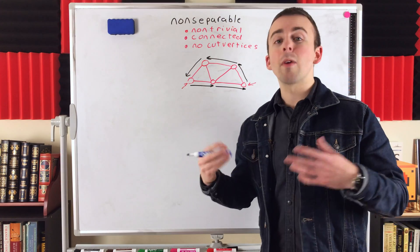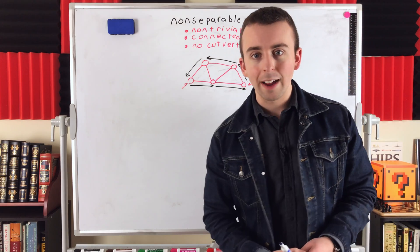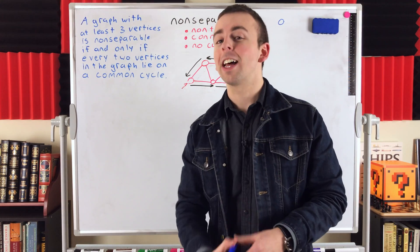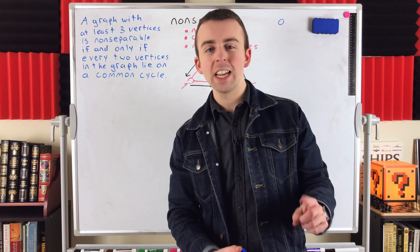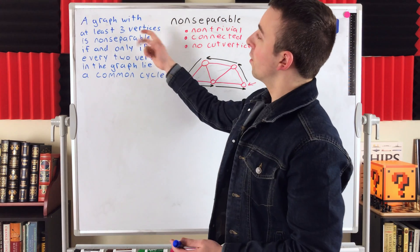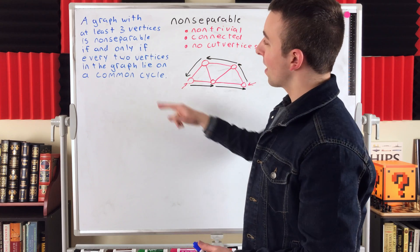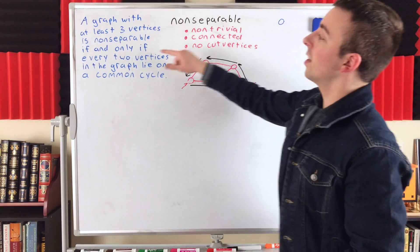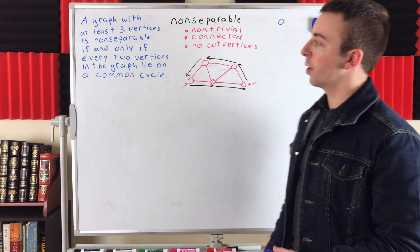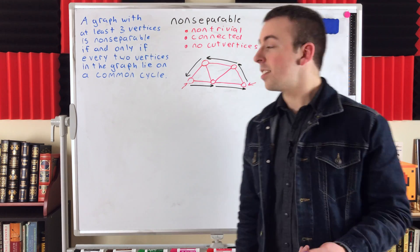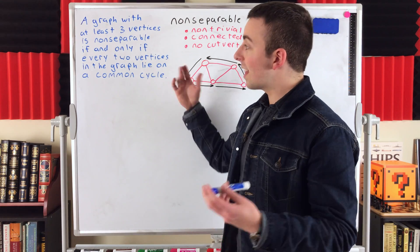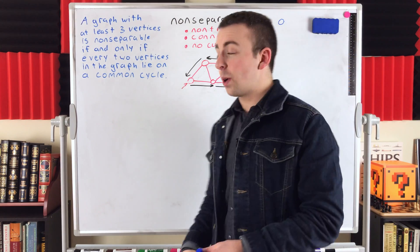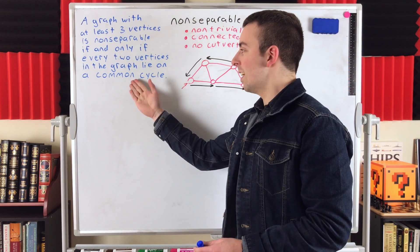Here is our characterization of non-separable graphs, which we will prove in a later lesson. Let me know in the comments if you'd like to see that proof sooner. A graph with at least three vertices is non-separable if and only if every two vertices in the graph lie on a common cycle. Notice that this characterization doesn't need to separately state that the graph is non-trivial or connected — having at least three vertices covers non-triviality, and every two vertices lying on a common cycle implies connectivity.